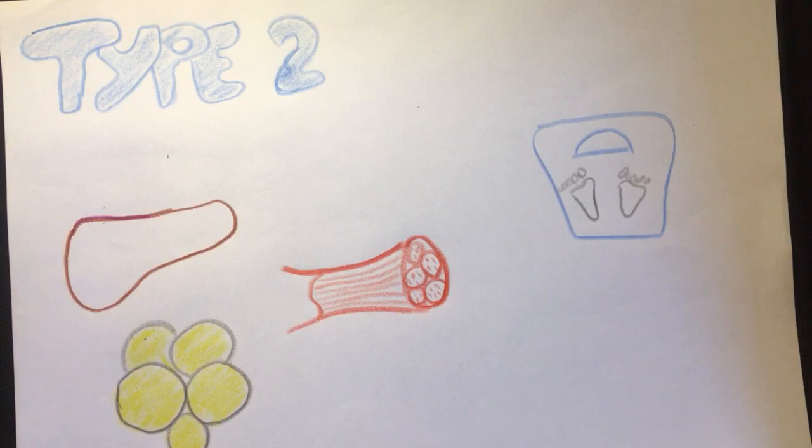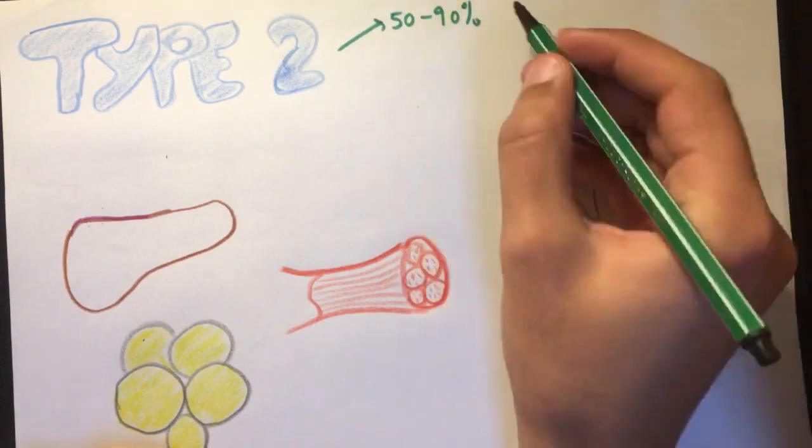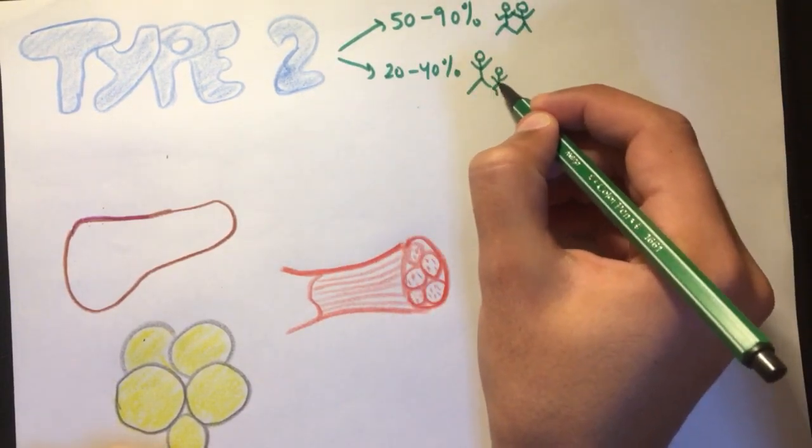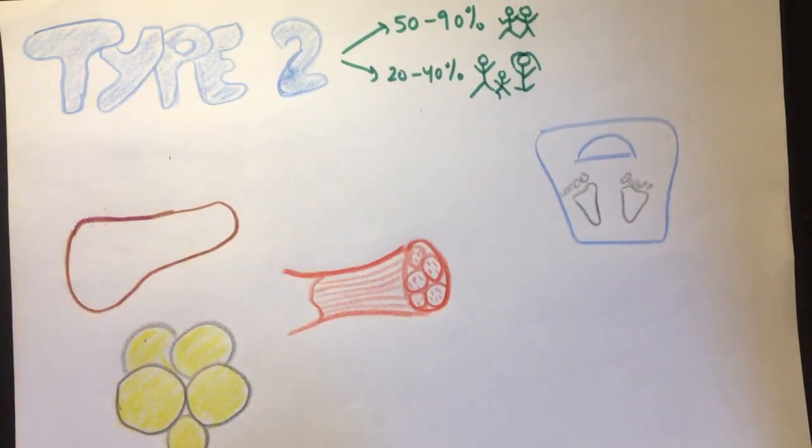Moving on to type 2 diabetes, which is more common. Genetically, type 2 diabetes is more associated than type 1, in which there is a concordance rate of 50-90% between identical twins and 20-40% between relatives.